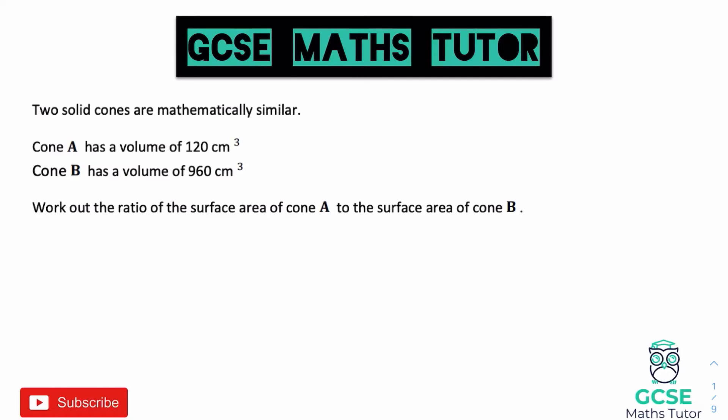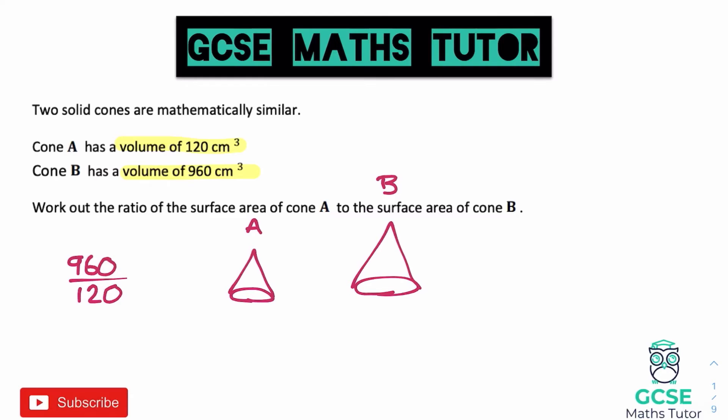For our second question: two solid cones are mathematically similar. Cone A has a volume of 120 and cone B has a volume of 960. We need to work out the ratio of the surface area of cone A to the surface area of cone B. Using a non-calculator approach, we take the bigger volume divided by the smaller: 960 divided by 120 equals 8. So our volume scale factor is 8.